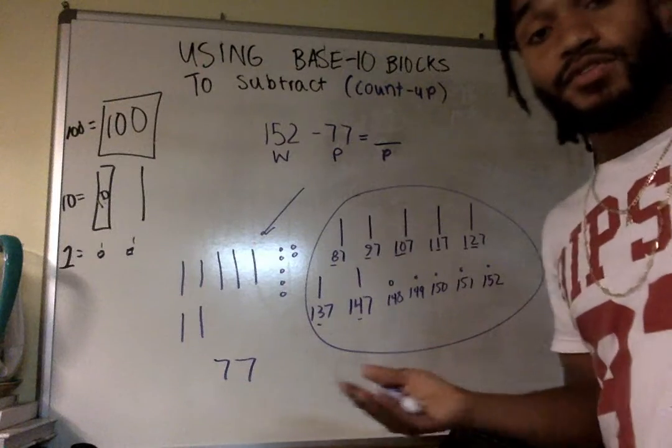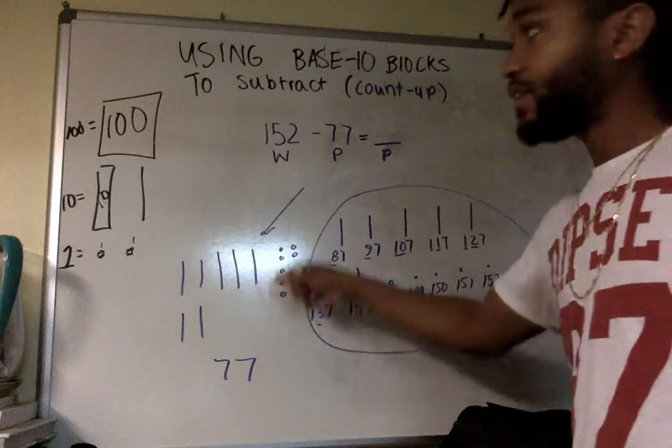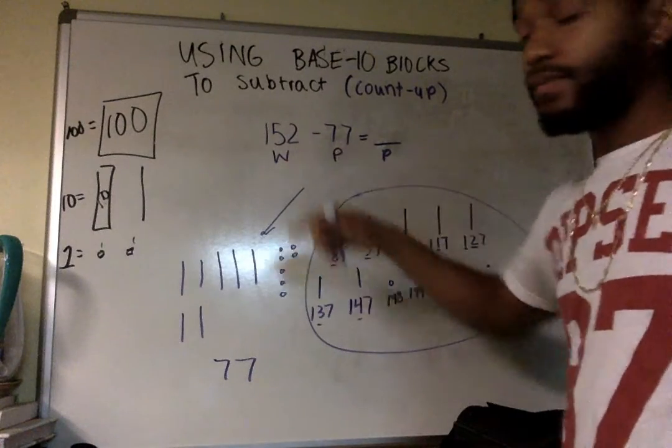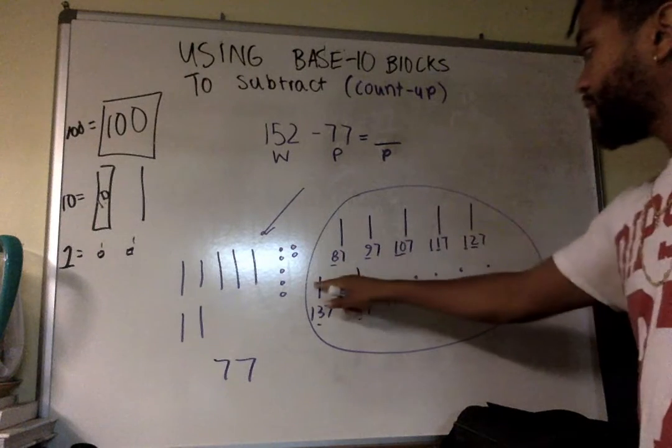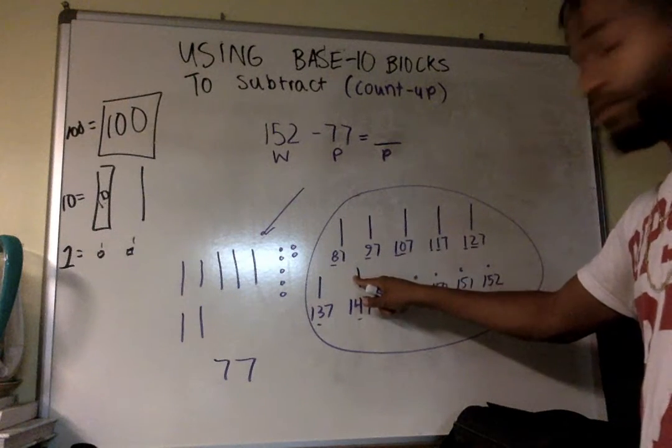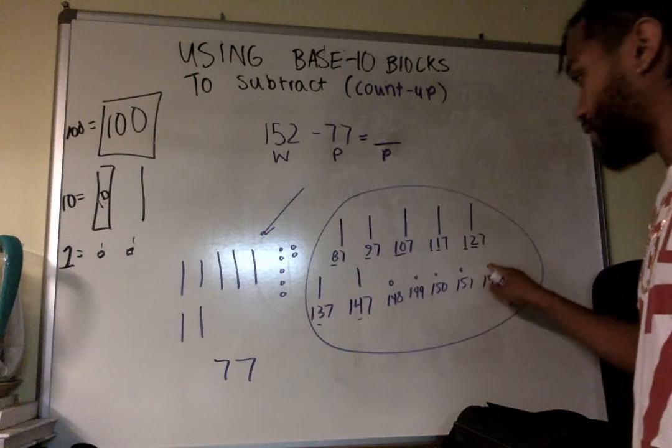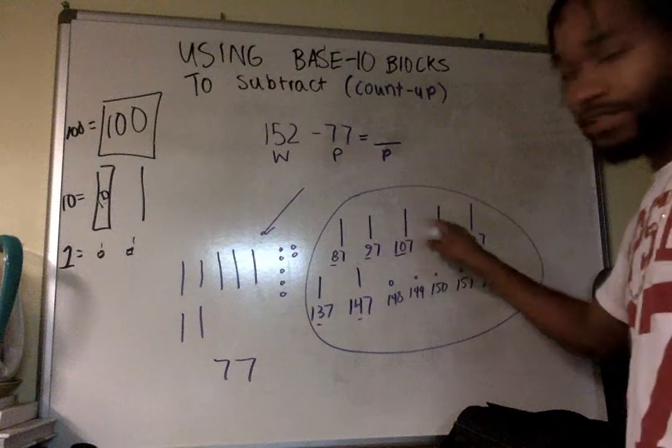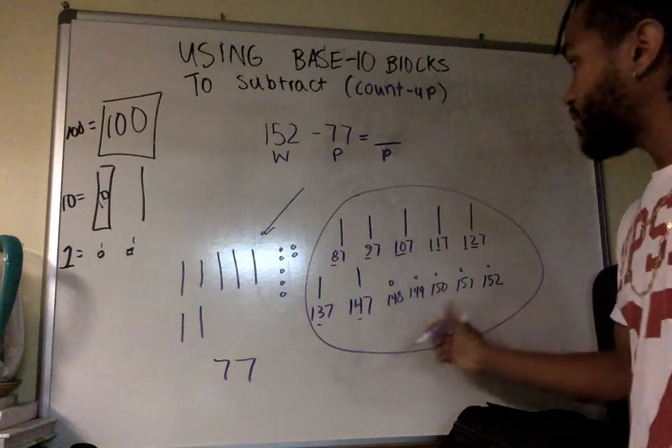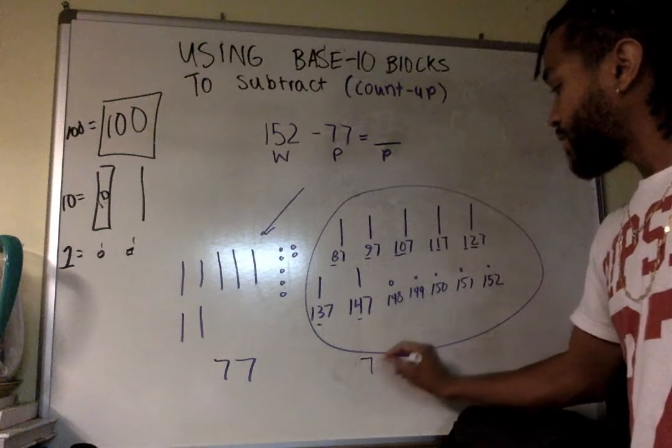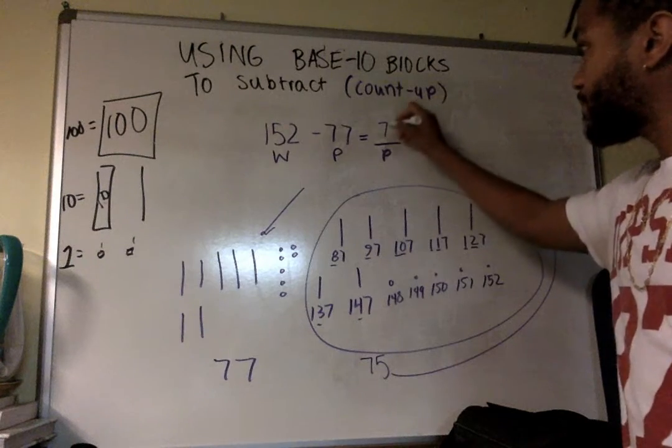The next thing I have to do is figure out what I just added on from 77 to get to 152. 10, 20, 30, 40, 50, 60, 70. Now I have the 1s. 71, 72, 73, 74, 75. And you see, kids can actually touch and count. It brings another sense into it. So 75 is actually that missing part.